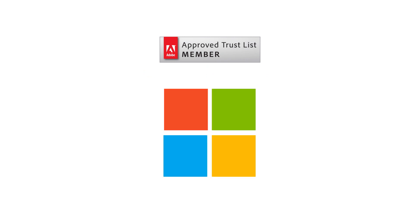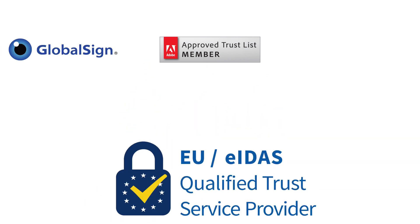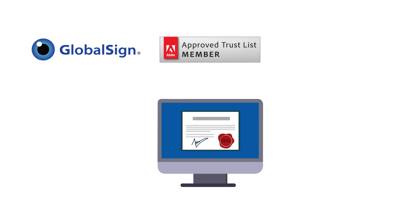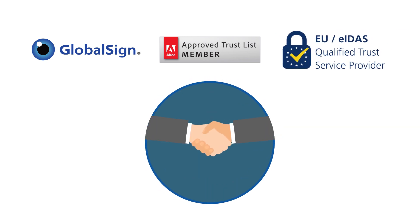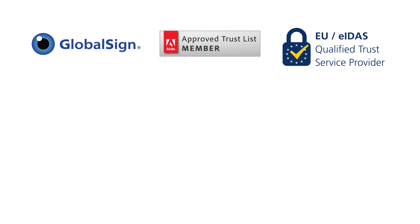Being a trusted CA, a member of the Adobe Approved Trust List and Microsoft Root Programme, as well as a qualified trust service provider, GlobalSign is able to deliver these types of certificates for both forms of digital signatures, as well as advanced and qualified signatures and seals under eIDAS, ensuring they will be trusted in leading document software.